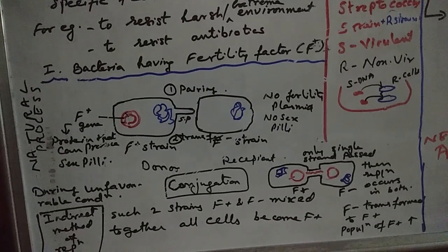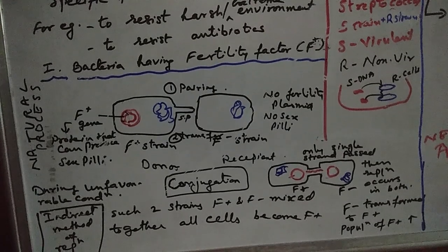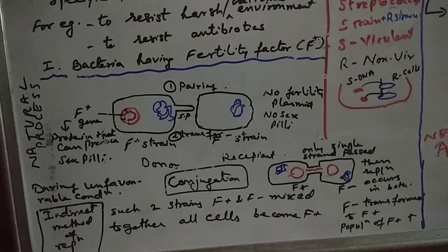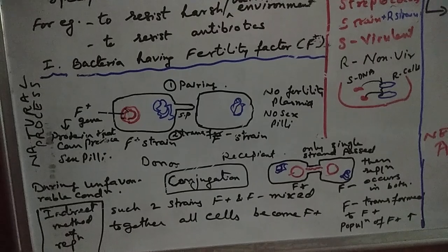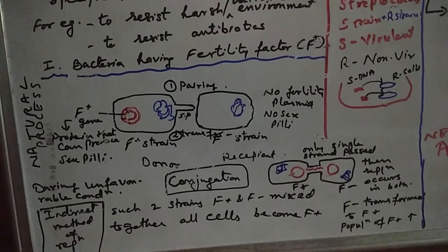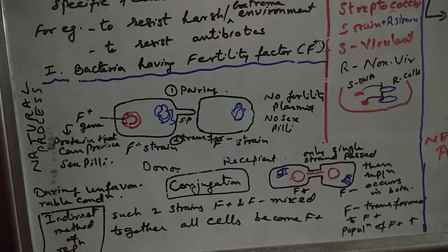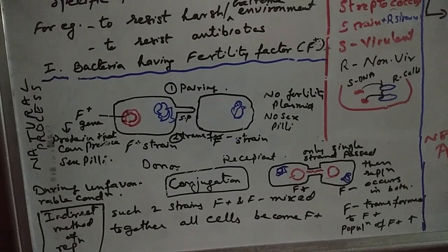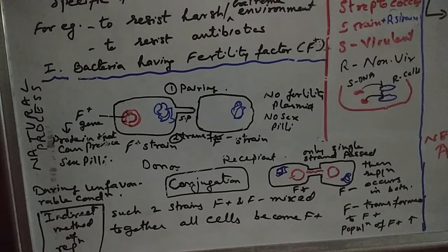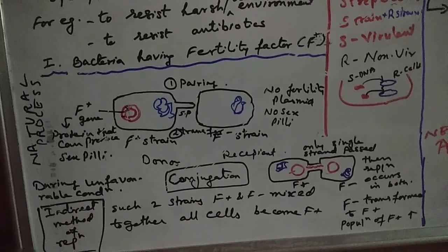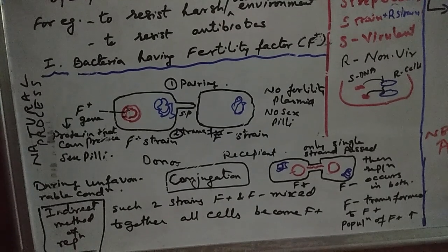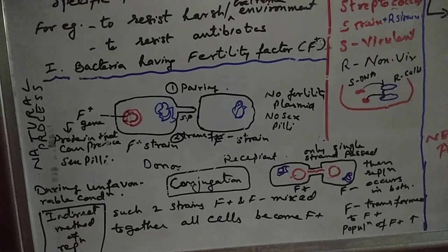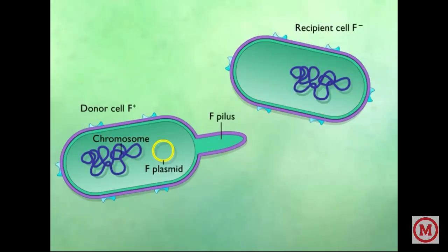Naturally, through a natural process, this F+ strain can give its F+ gene — that is, the plasmid — to the F− strain. The F+ strain here is called the donor and the F− strain is called the recipient.